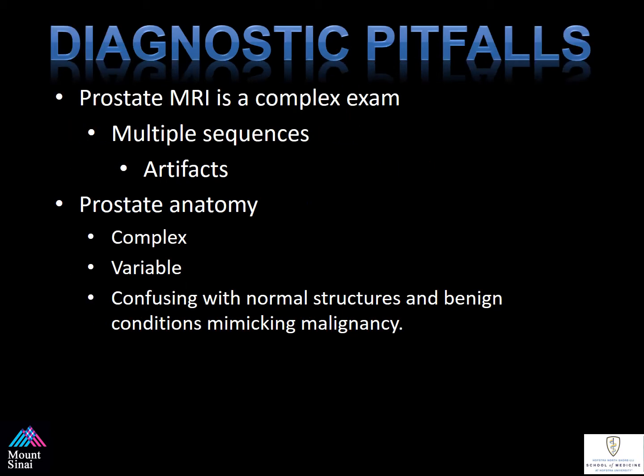There are several diagnostic pitfalls associated with multi-parametric MRI of the prostate. First, prostate MRI is a complex exam with multiple sequences, and each sequence is susceptible to its own unique artifacts. Once you're past the type of sequences and the artifacts, prostatic anatomy is complex, variable, and it's almost like a man's fingerprint — unique unto himself. You can confuse normal structures and benign conditions with malignancies. One is able to overcome these with experience and patience.